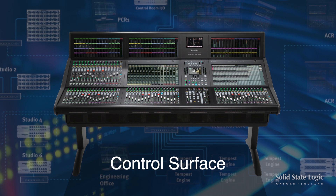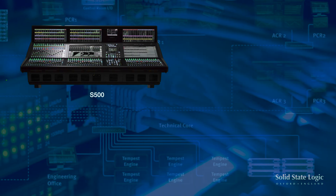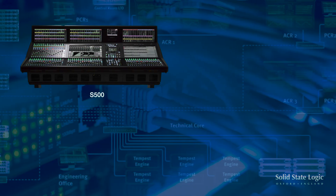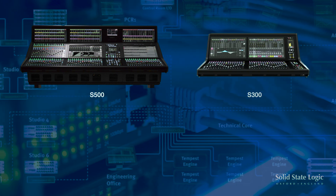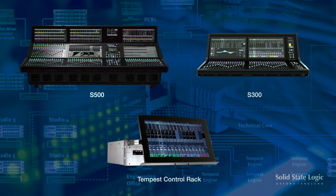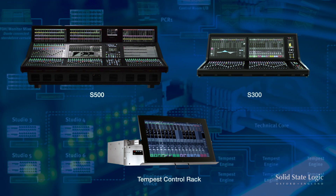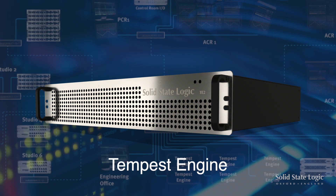There are three essential building blocks. The first is the control surface. We have the S500 series which can be custom built to any size, the S300 which comes in three sizes: 16, 32 and 48 faders, and the headless console called TCR or Tempest Control Rack. It is a pure IP device — there is actually no audio in the control surface. The second element is the Tempest engine, which is the name we give to our patented optimal core processing — hence the name System-T for Tempest.